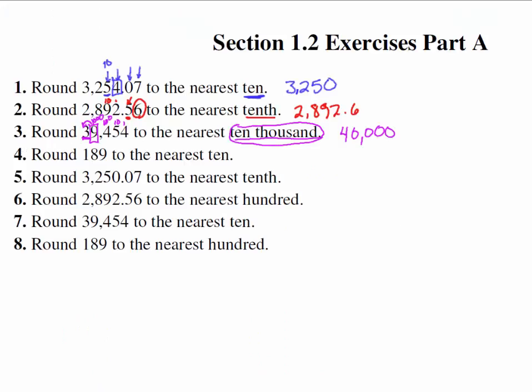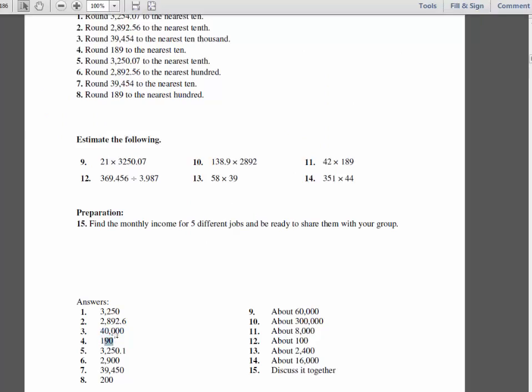Number 4, round 189 to the nearest ten. So the nearest ten, this is somewhere between 180 and 190. We're rounding to this position, so we look at the 9. Well, 180 and 190, that 9 tells us that we are closer to 190. We round it up. Number 5, oh, let's check our answer first. Yep, 190 it is.